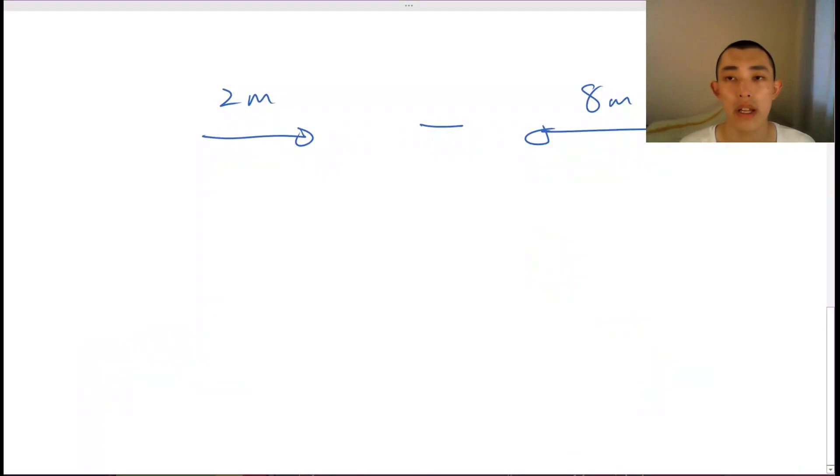Now let's have a look at a harder example of vector subtraction. So here we have a 2 meter vector pointing towards the right, subtracted from an 8 meter vector pointed towards the left. So this will be 2 meters. Again, we're going to turn this minus sign into a plus sign, because we can't actually do vector subtraction. We can only do vector addition.